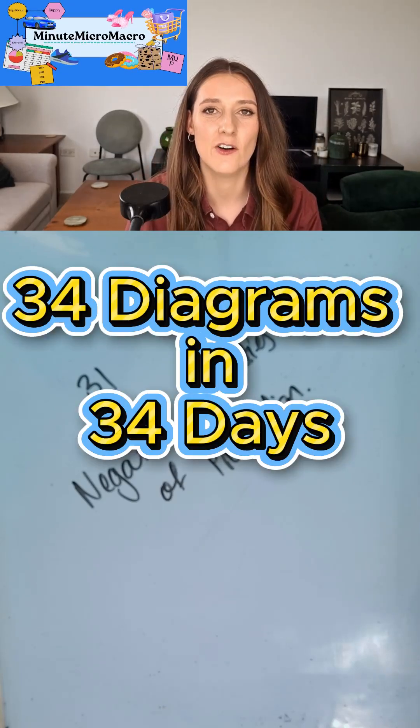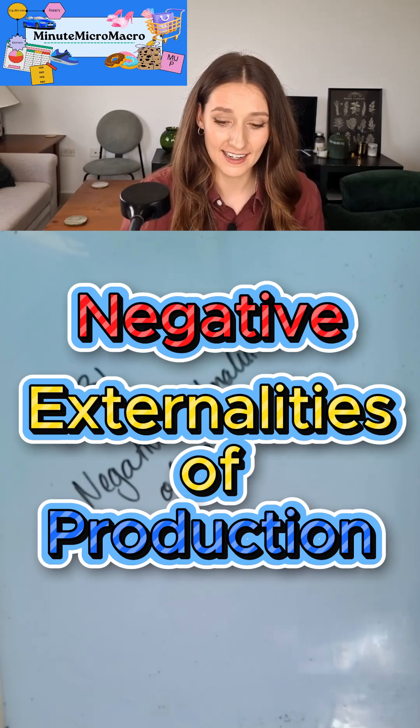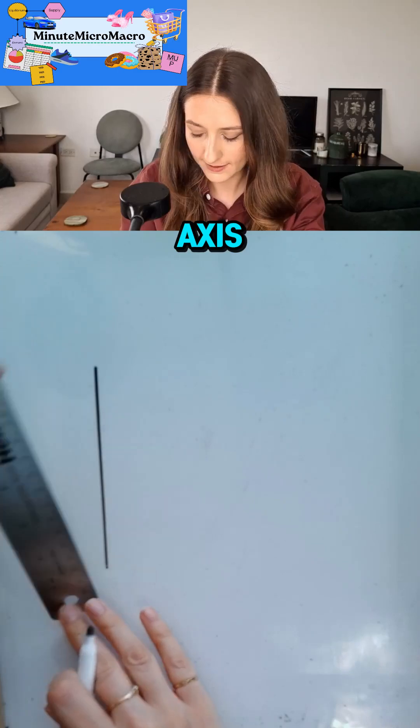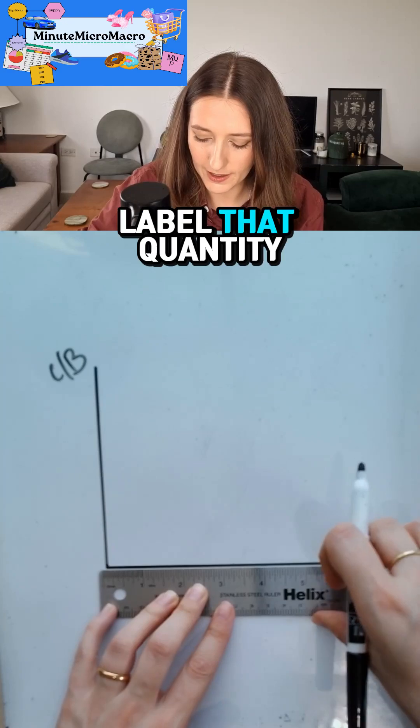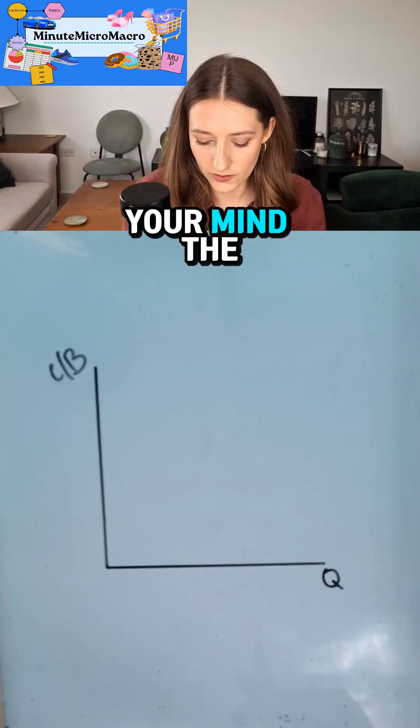Hello and welcome back to 34 days of diagrams. We're going to number 31, negative externalities of production. So these are our diagrams. We've got our y-axis, and we're going to label that cost and benefits, and we've got our x-axis. I'm going to label that quantity.